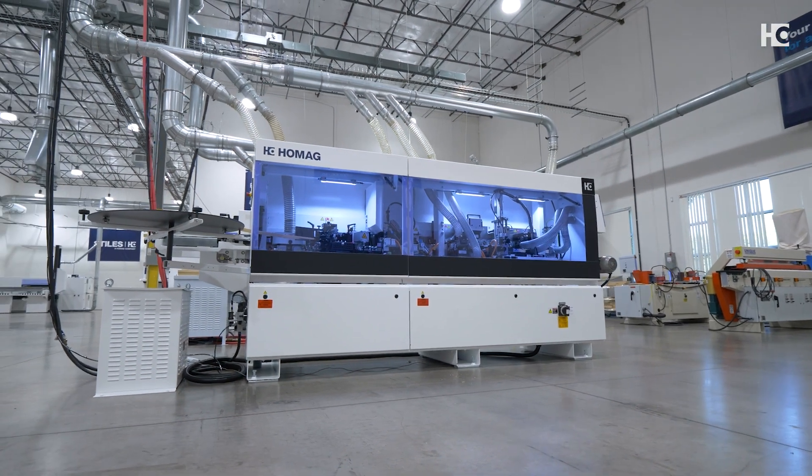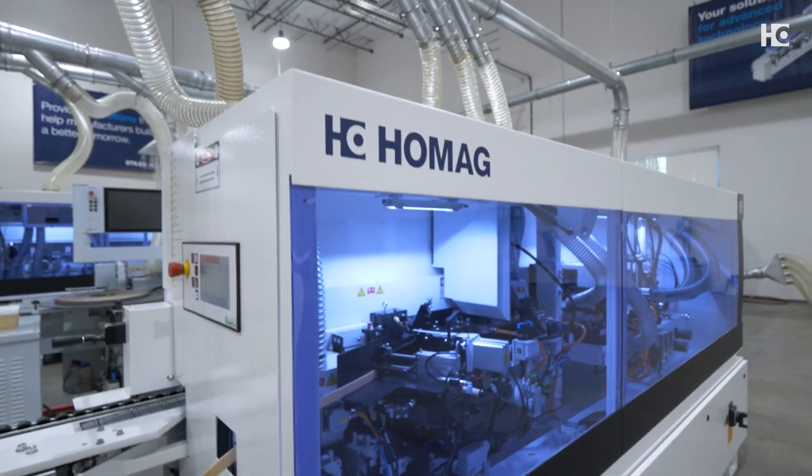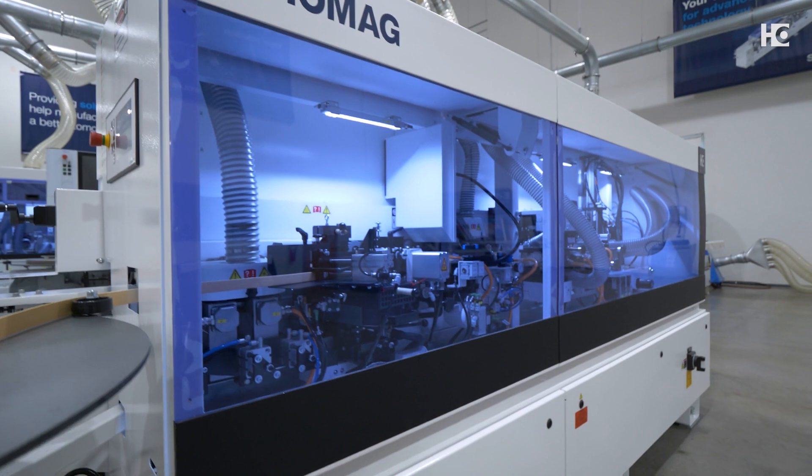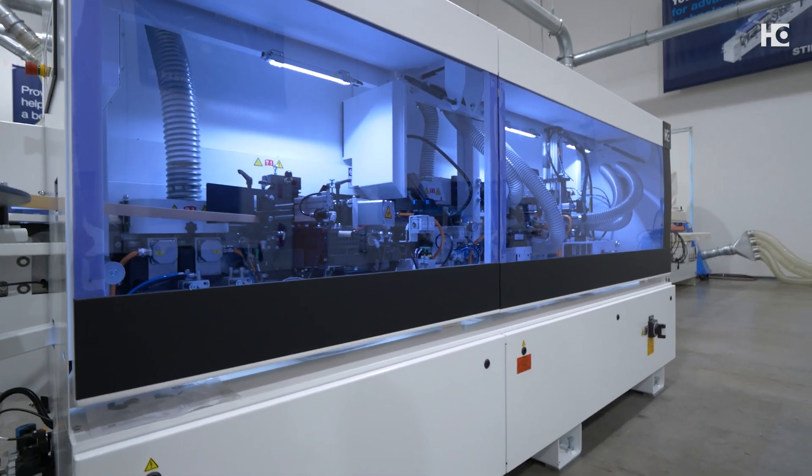This is the HOMAG Edgetec S200 FC. Running at 8 meters per minute, this is our entry-level solution to corner rounding.